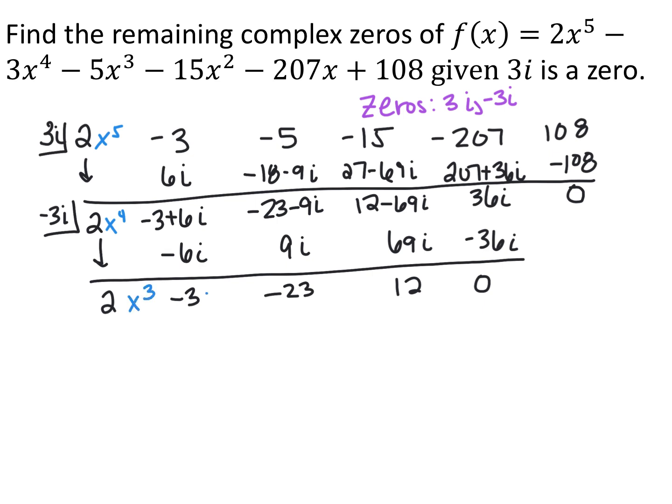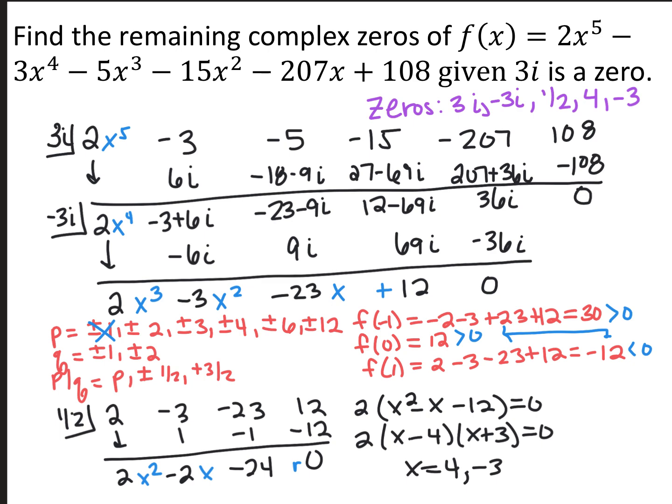Now we have a cubic function that I can treat just like my other cubic function. I try factoring by grouping — it does not factor that way, so I go to p's and q's. For 2x cubed minus 3x squared minus 23x plus 12, my p's are plus or minus 1, 2, 3, 4, 6, and 12; my q's are plus or minus 1 and 2. So my possible rational zeros include all p's and also 1 half and 3 halves. I tried negative 1, 0, and 1 — none worked, but I got an intermediate value theorem between 0 and 1. Since f of 0 and f of 1 were evenly on either side of 0, I picked 1 half, which was also the only candidate between 0 and 1. Synthetic division with 1 half gave a remainder of 0.